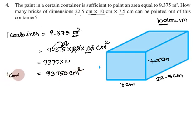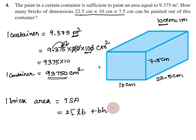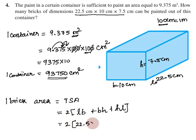One container can paint 93,750 cm². Now for one brick — a brick is a cuboid shape. We find its Total Surface Area using the formula TSA = 2(LB + BH + HL), where L is length, B is breadth, and H is height. So length is 22.5 cm, breadth is 10 cm, height is 7.5 cm.